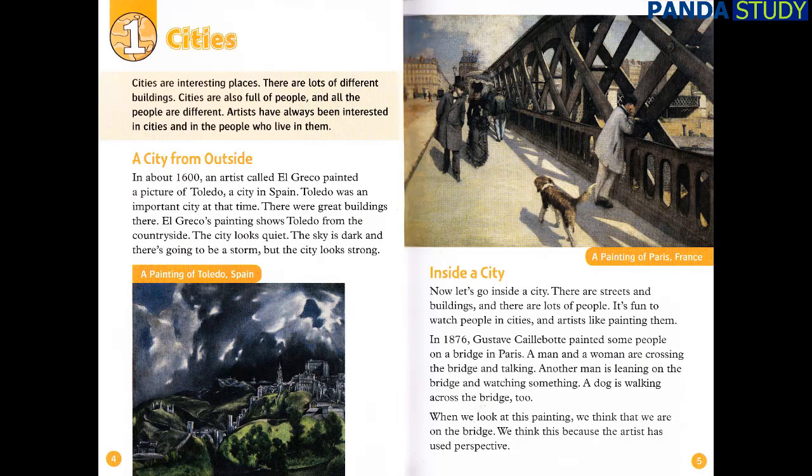A City from Outside. In about 1600, an artist called El Greco painted a picture of Toledo, a city in Spain. Toledo was an important city at that time. There were great buildings there. El Greco's painting shows Toledo from the countryside. The city looks quiet. The sky is dark, and there's going to be a storm. But the city looks strong.